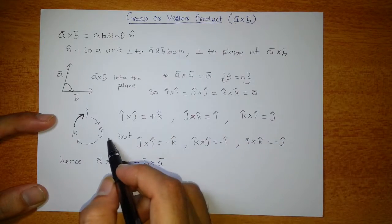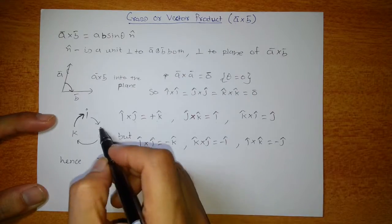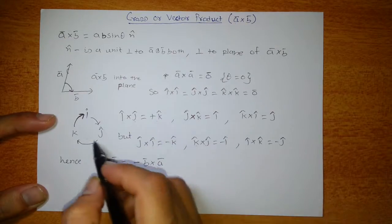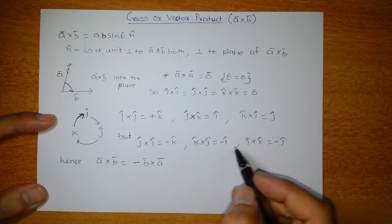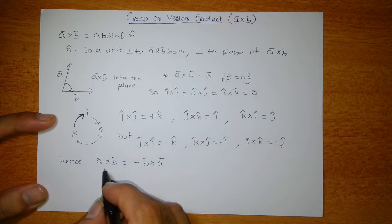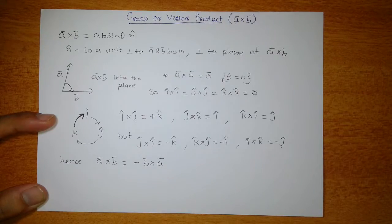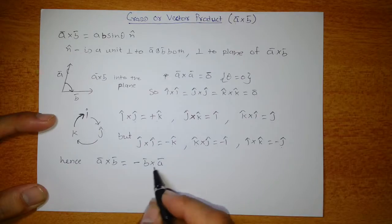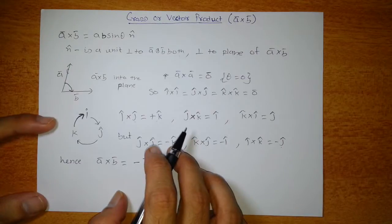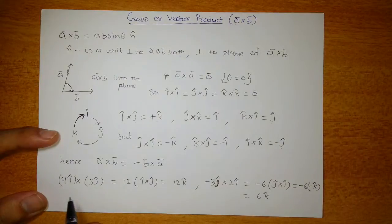If we go against the arrows, the results are negative: j cross i is minus k; k cross j is minus i; and i cross k is minus j. So we can say A cross B equals the negative of B cross A, because the magnitudes are the same but they are opposite in direction.